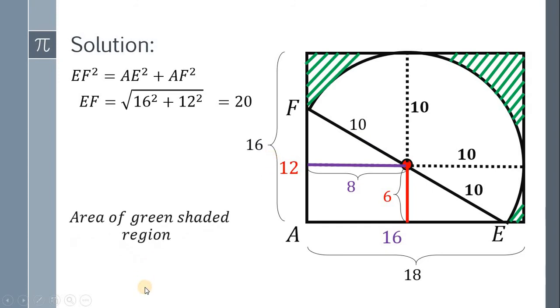To find the area of the green shaded region, we need the area of the rectangle, which is base times height, or 16 times 18. Then we subtract the area of this triangle, which is one-half times base times height, or one-half times 12 times 16. Also, we need to subtract the area of this semicircle, which equals one-half times pi r squared, where r equals 10. So we have one-half times pi times 10 squared. Simplifying, we get 192 minus 50 pi square units.